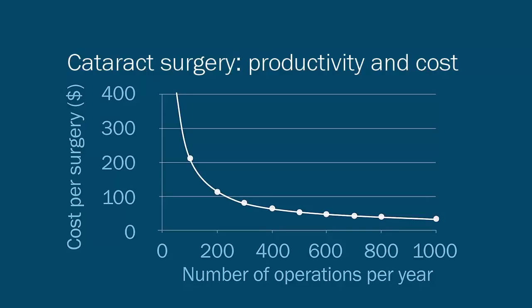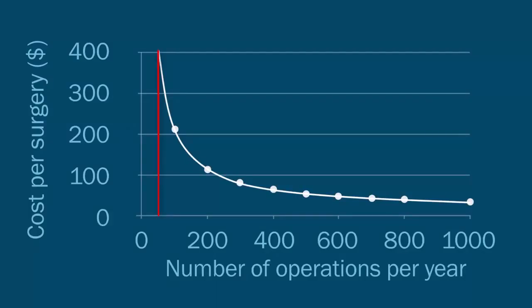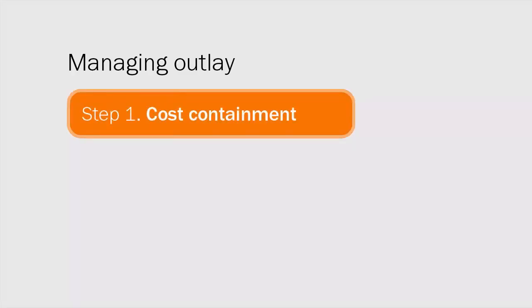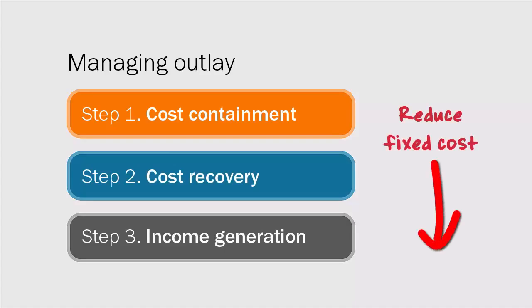For example, dividing a fixed cost of $400,000 by a plan to do 500 surgeries gives us $800. Adding this to a cost of consumables for one surgery of $200 makes the cost of one surgery $1,000. This graph illustrates the relationship between productivity and cost of cataract surgery. The cost per cataract surgery is shown on the y-axis and the number of surgeries on the x-axis. When 50 surgeries are done the cost per cataract is $400, but increasing to 200 surgeries brings this down drastically to $100. When between 800 and 1,000 surgeries are done, the cost drops again to less than $50 per cataract, because the fixed cost is spread across many more surgeries, helping to reduce the price for the patient and increase affordability.